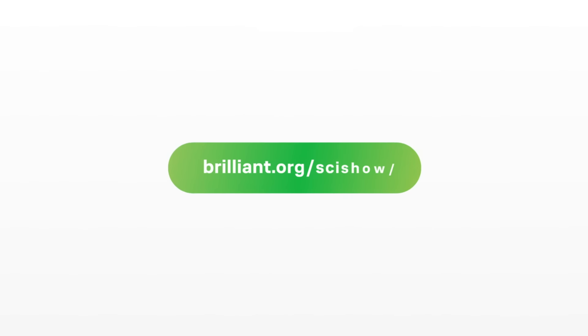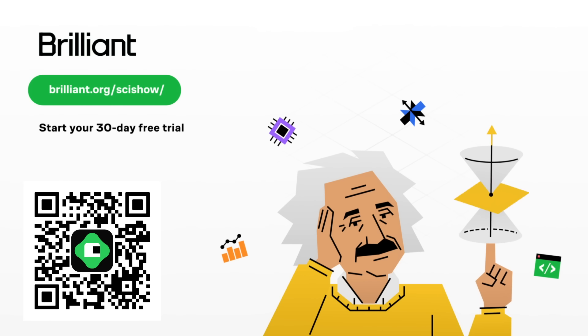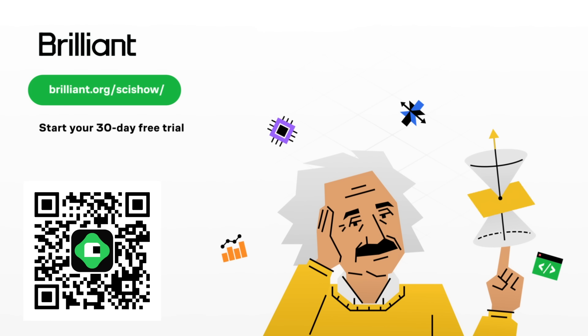We sprinkle jokes all over SciShow videos. And Brilliant lessons are full of puzzles and quizzes so that you can learn in an interactive fun way. For all of those reasons and more, you might want to give Brilliant a try, for free, for the first 30 days at Brilliant.org slash SciShow or the link in the description. That link will also give you 20% off an annual Premium Brilliant subscription.